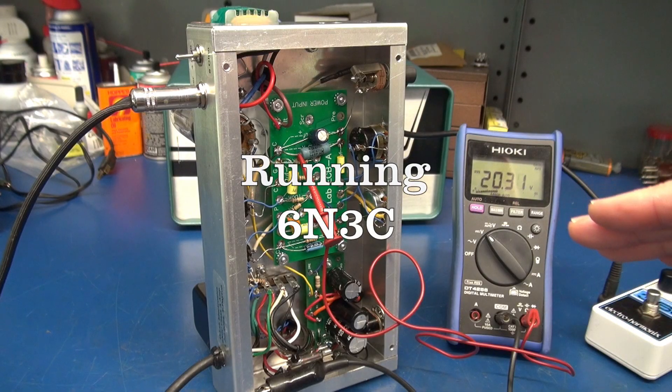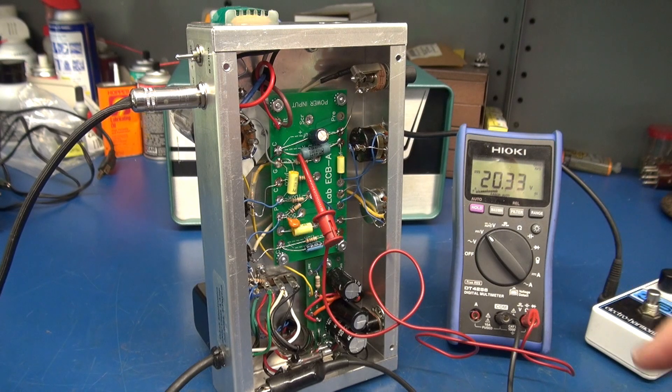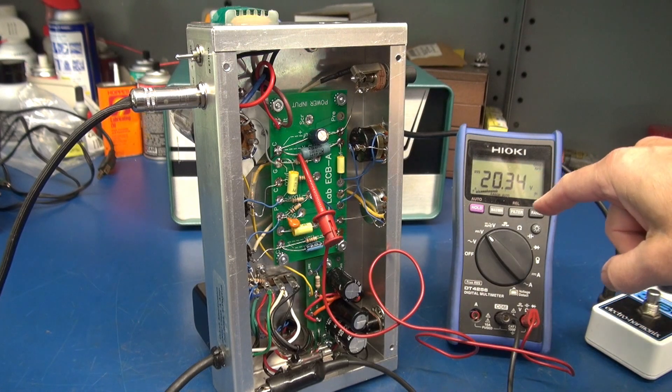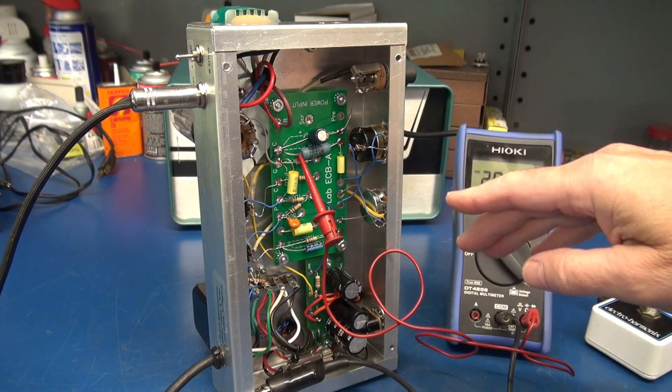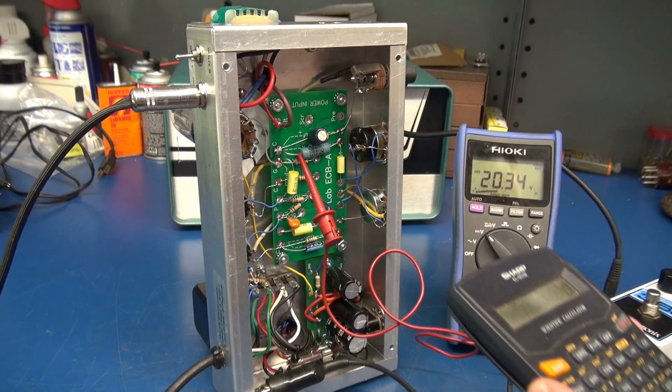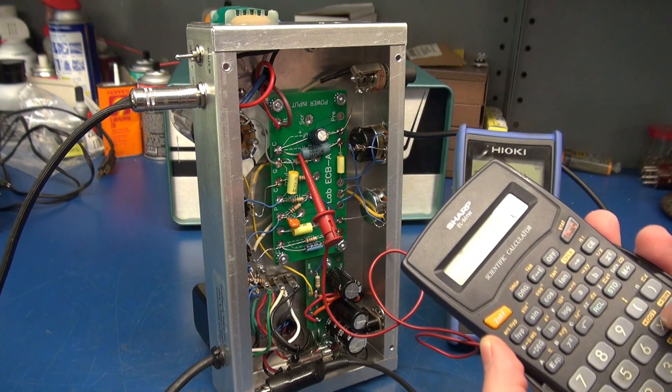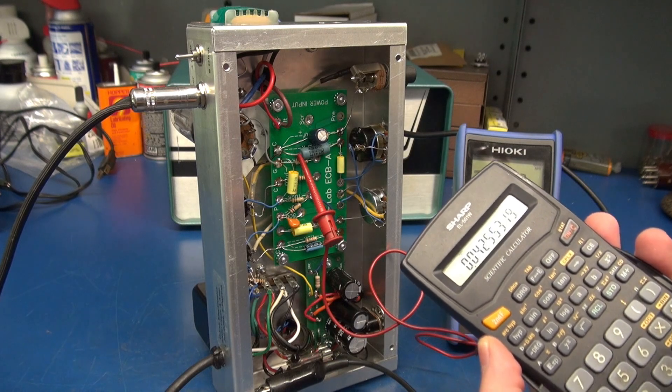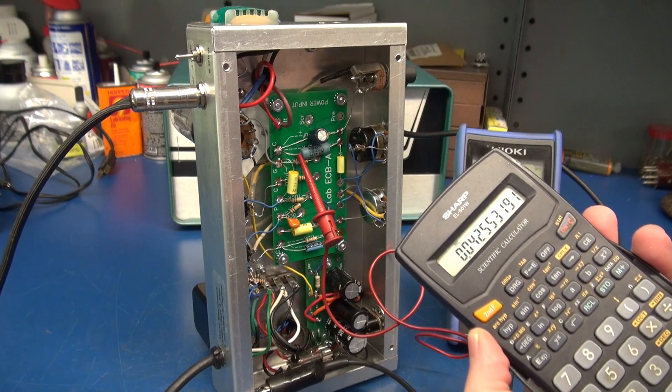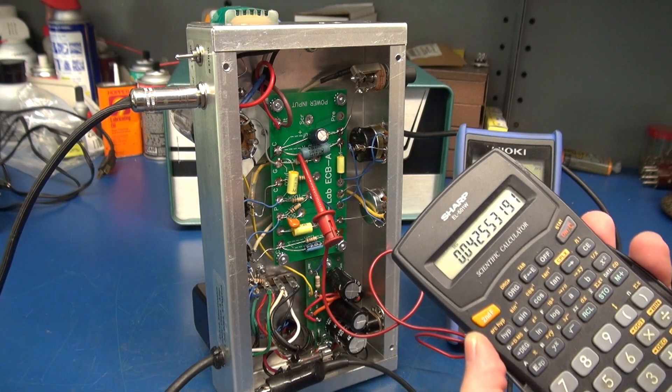Alright, this time I'm running the 6N3C output tube. I'm measuring the voltage across the cathode resistor which is 470 ohm at 5 watt. So if I take my 20 volts and divide that by the 470 ohm resistor, it comes up to a little over 42 milliamps of current.